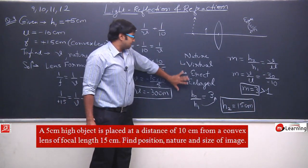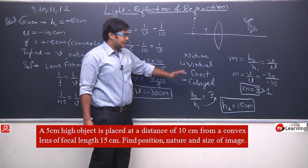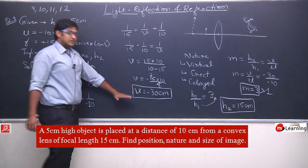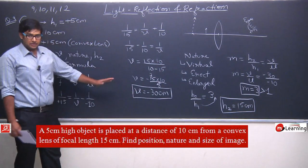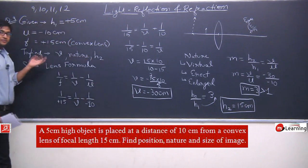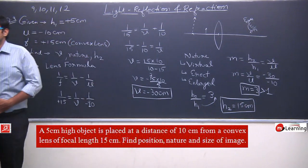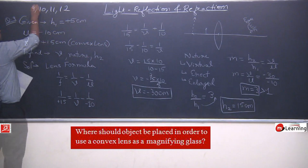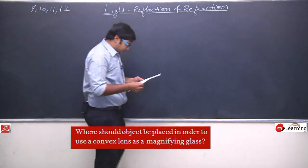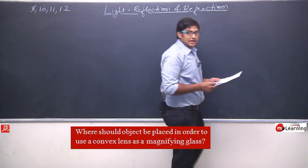Image ka nature hum ne bata diya — virtual hai, erect hai, enlarged hai. Aur hum ne position image ki bata di. Yehi teen cheejen hum se poochi gayi thi. So you can note this. We have discussed question number 9. Now we will discuss question number 10.